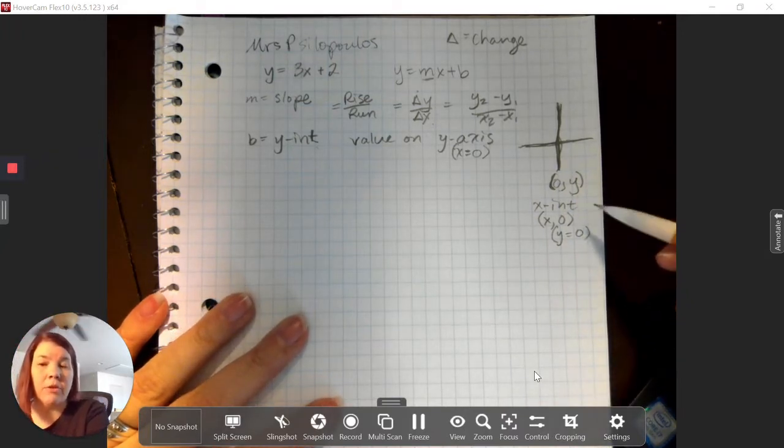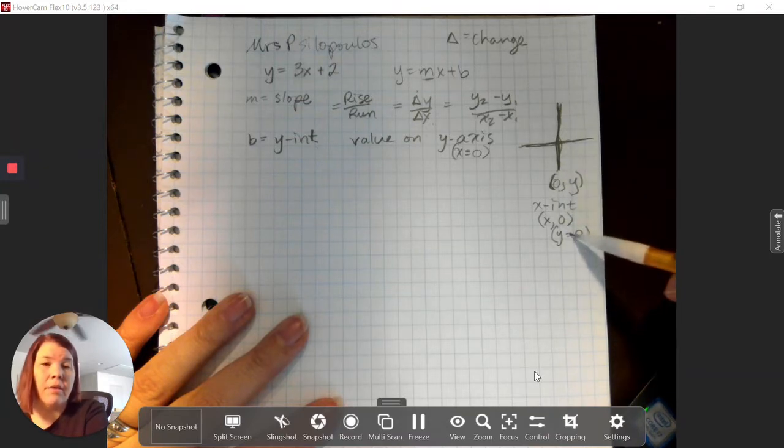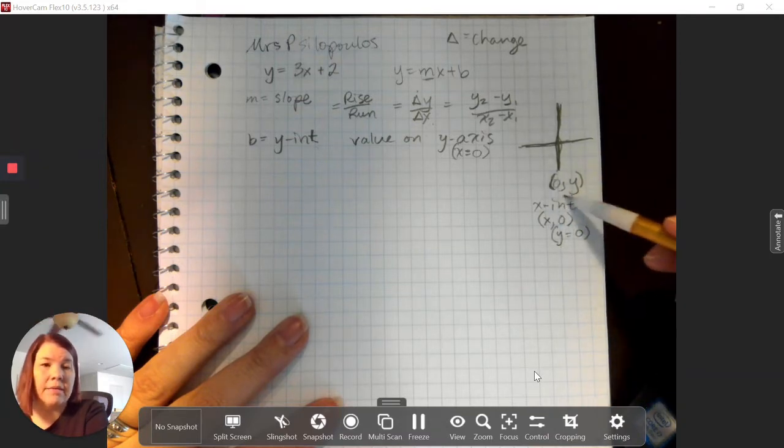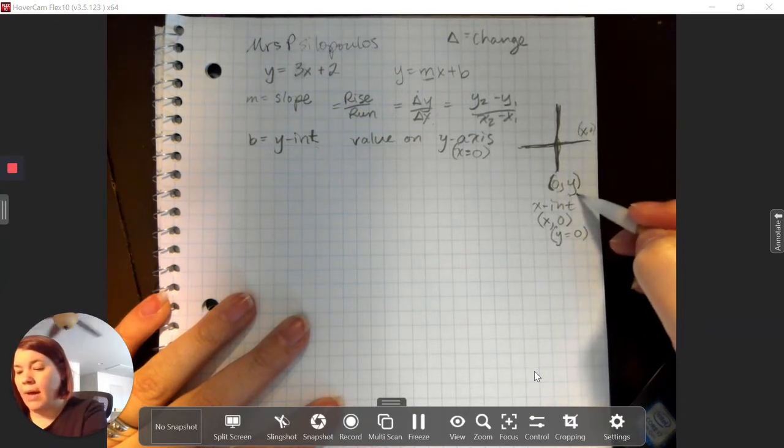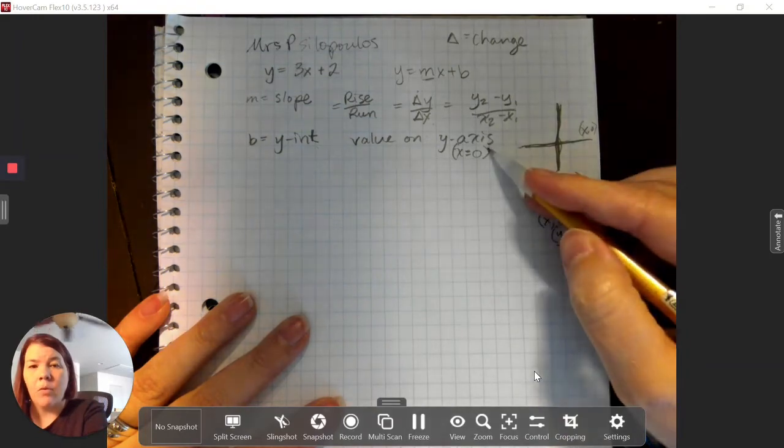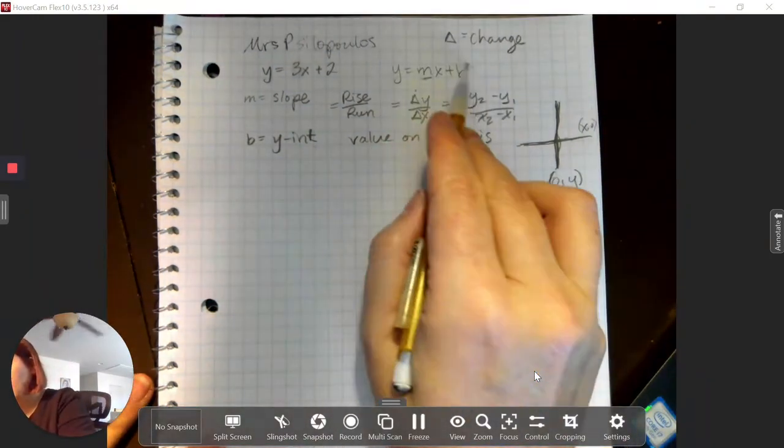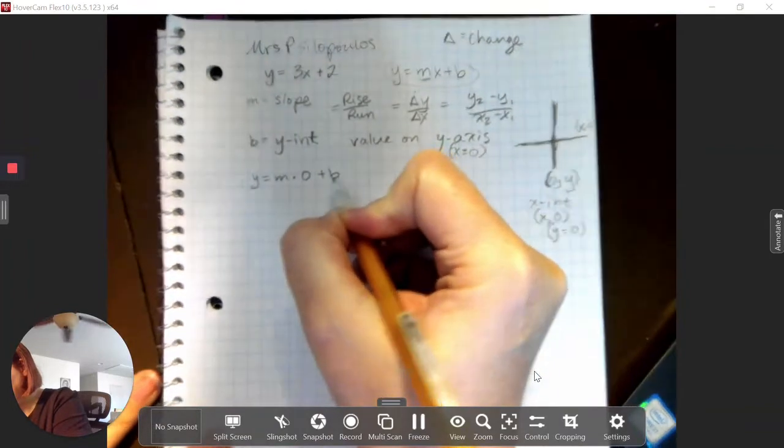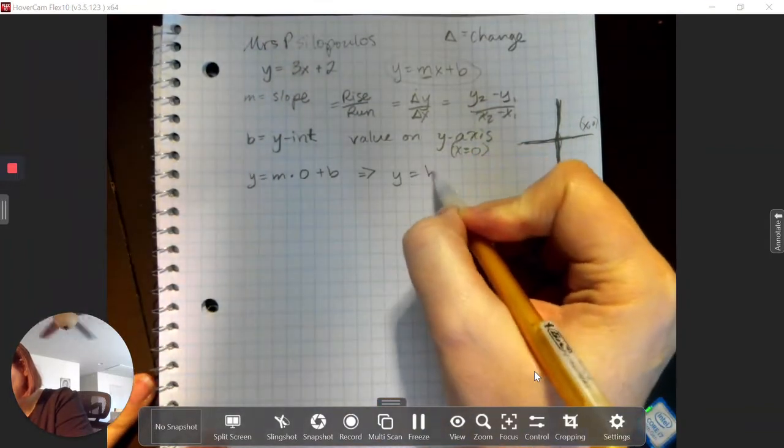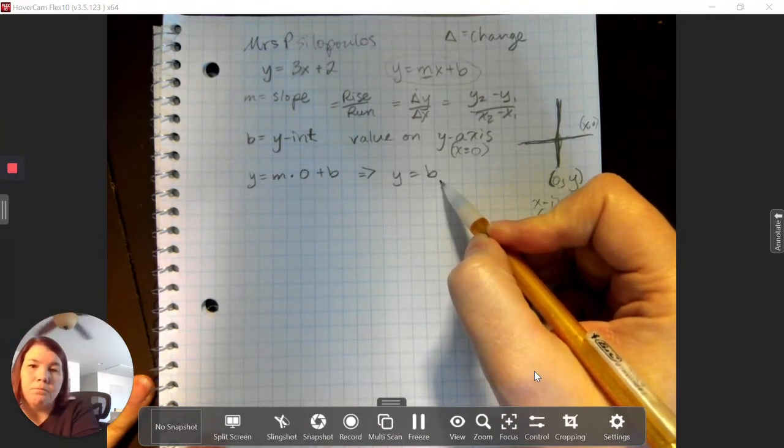We can actually define the y-axis as line x equals 0. That confuses a lot of people. But basically, on the y-axis, x is always 0. On the x-axis, if we were looking for x-intercepts, it's always x comma 0. So y is equal to 0 on the x-axis. In this equation, if x is 0, y equals m times 0 plus b, I always end up with y equals b, and that's why b is the y-intercept.